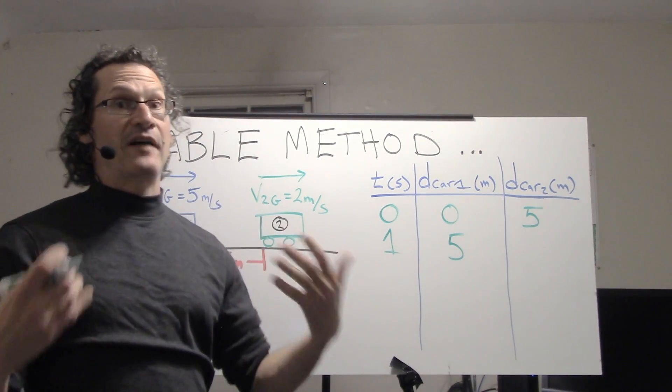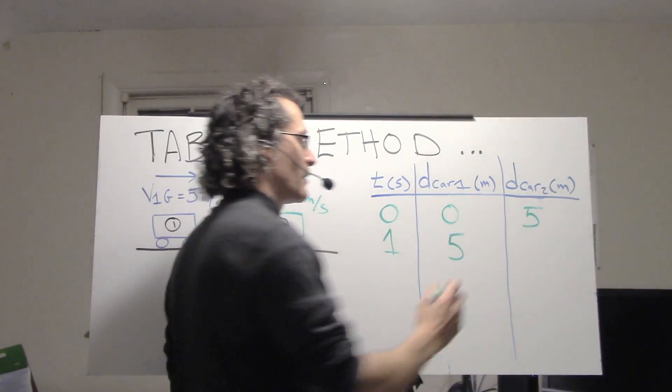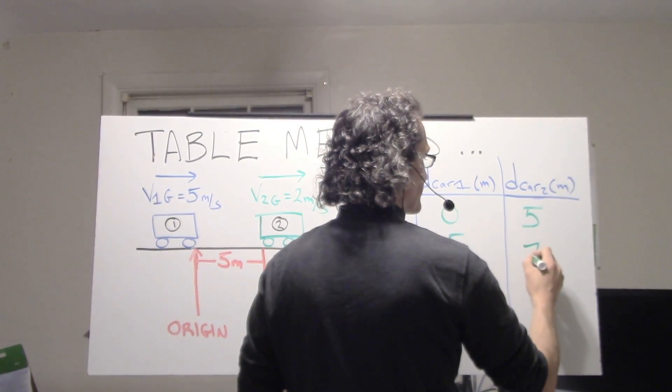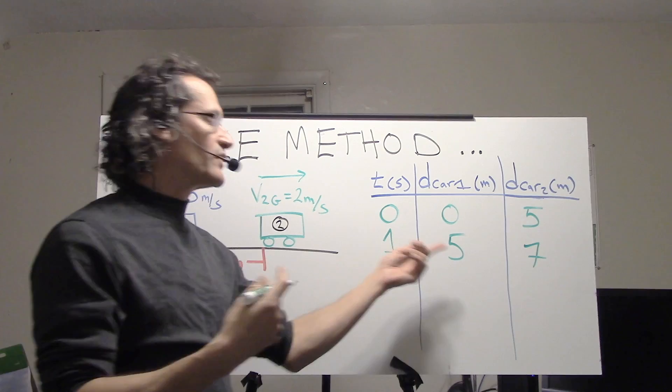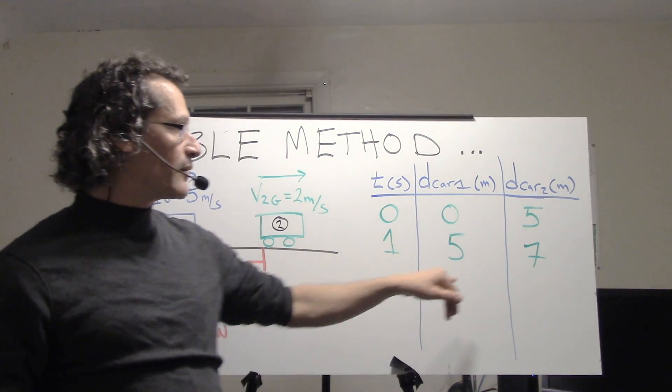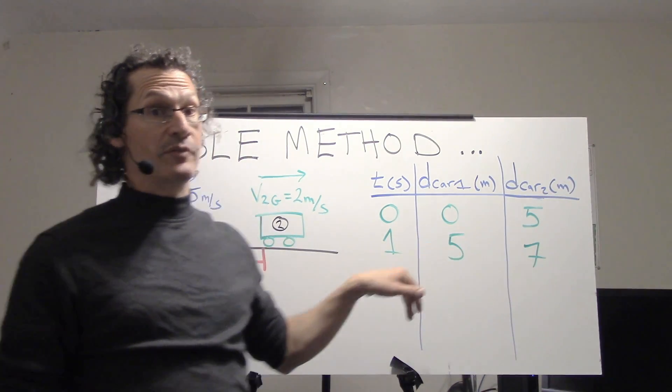It's going to be that five plus two meters per second, so it will be at position seven. Car two is still ahead of car one, but instead of by five meters, it's now only by two meters. The gap is closing.